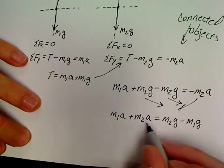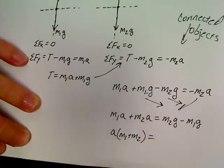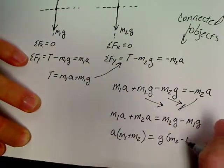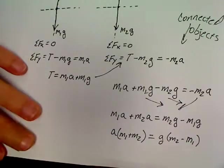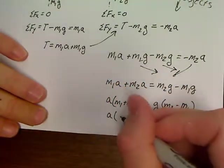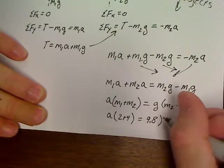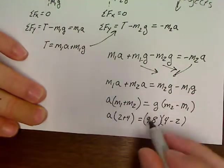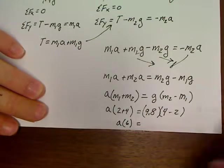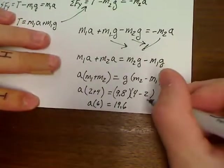So I'm going to bring this over and knock these two to the other side. I'm going to end up with M1a plus M2a equals M2g minus M1g. And now I can factor the A out of this side and have A times M1 plus M2 equals, you could factor the G out of this side and have G times M2 minus M1, but it's not really necessary. So this is going to be our acceleration.